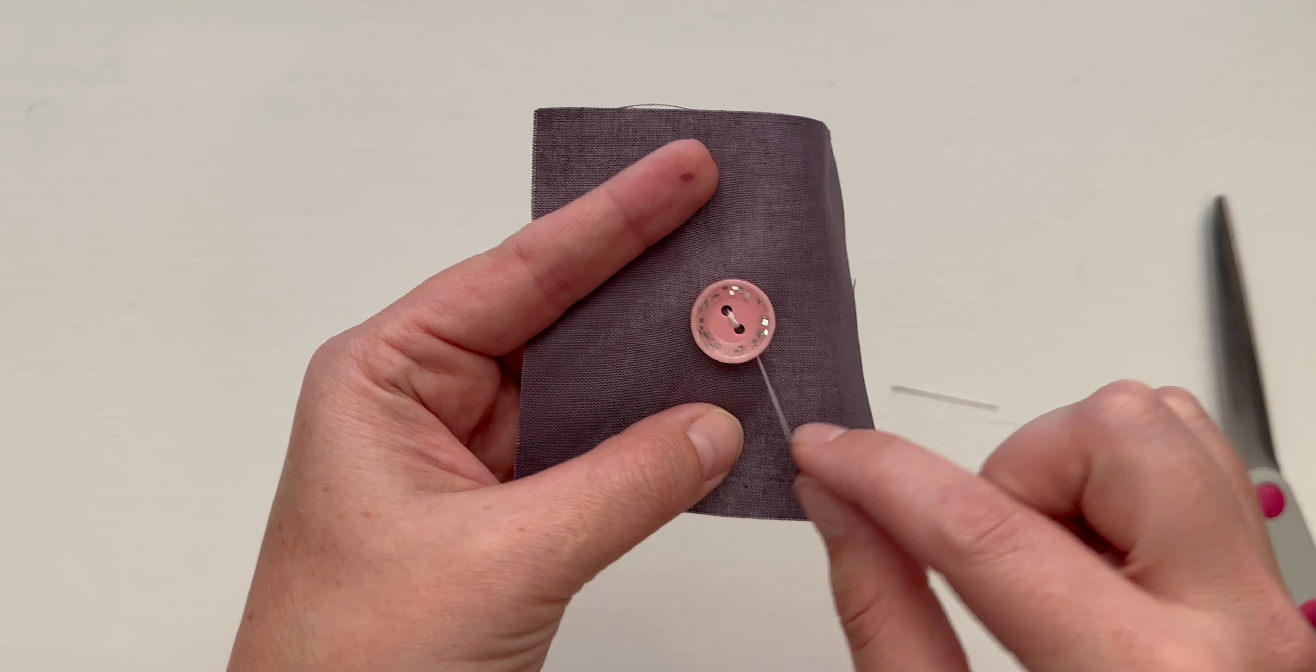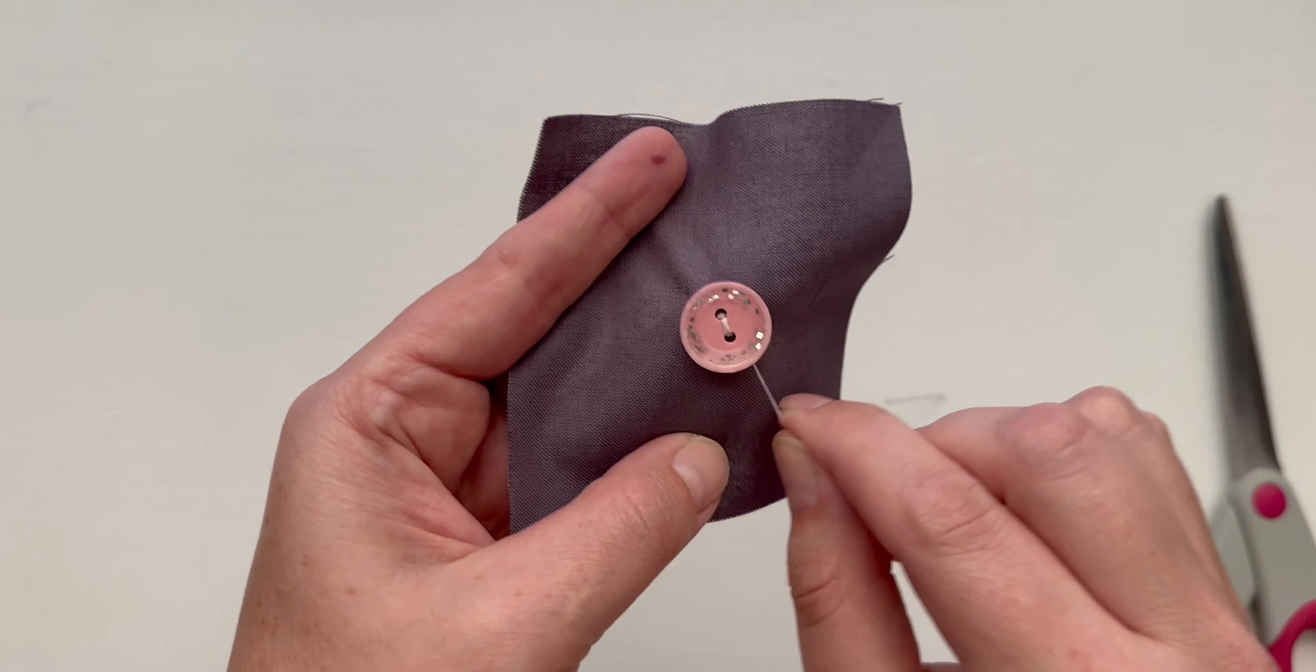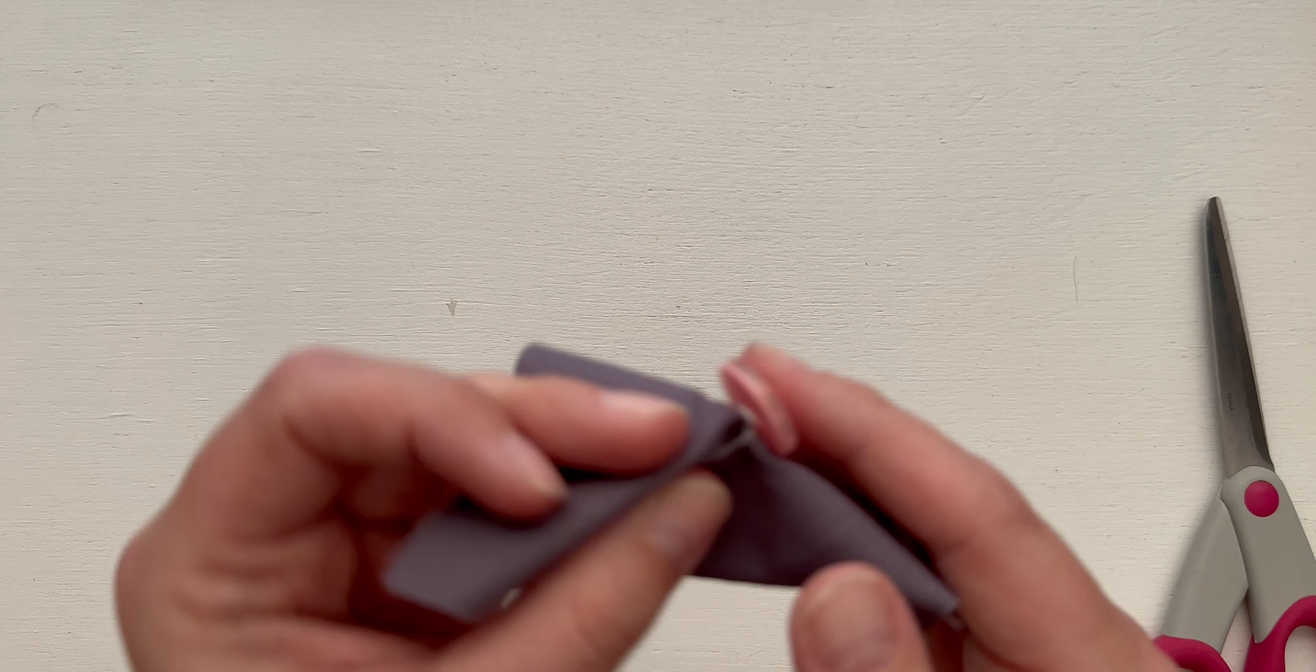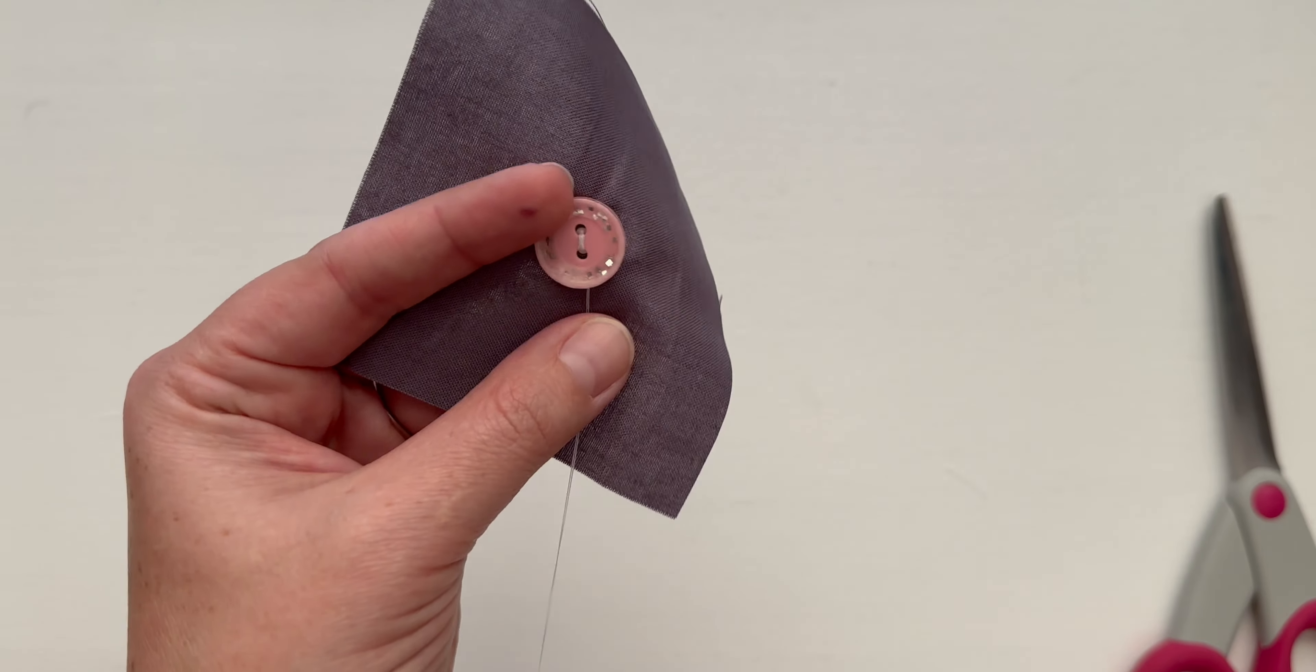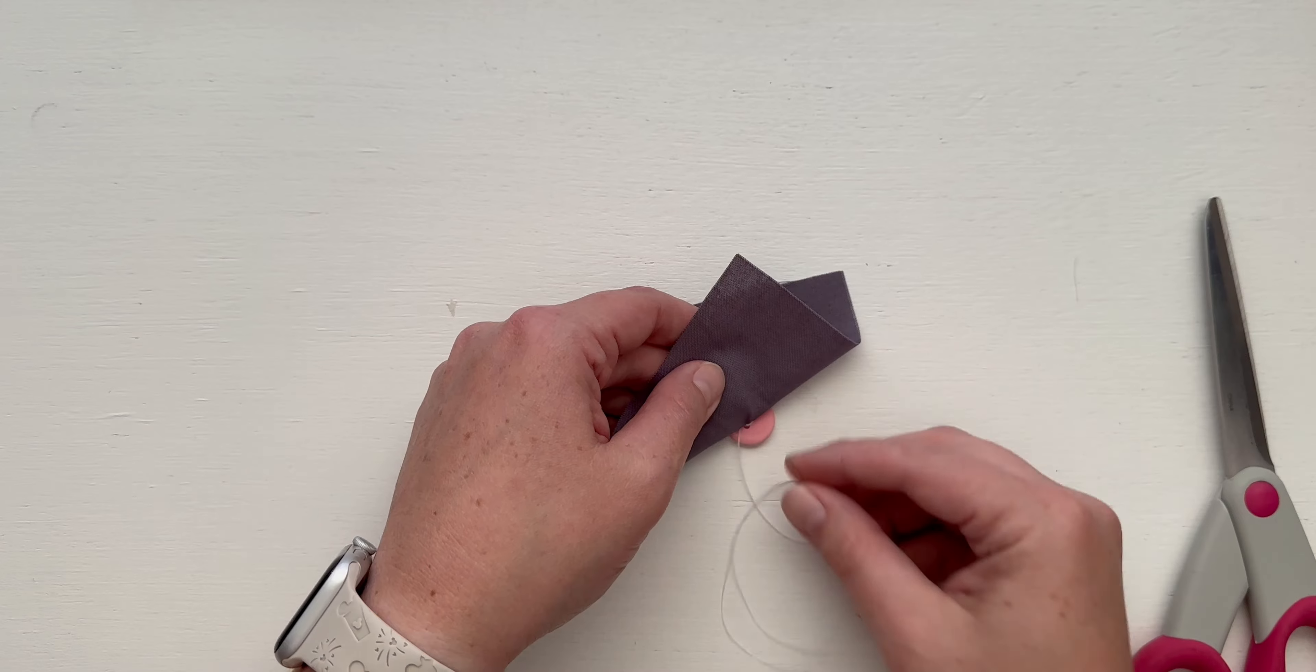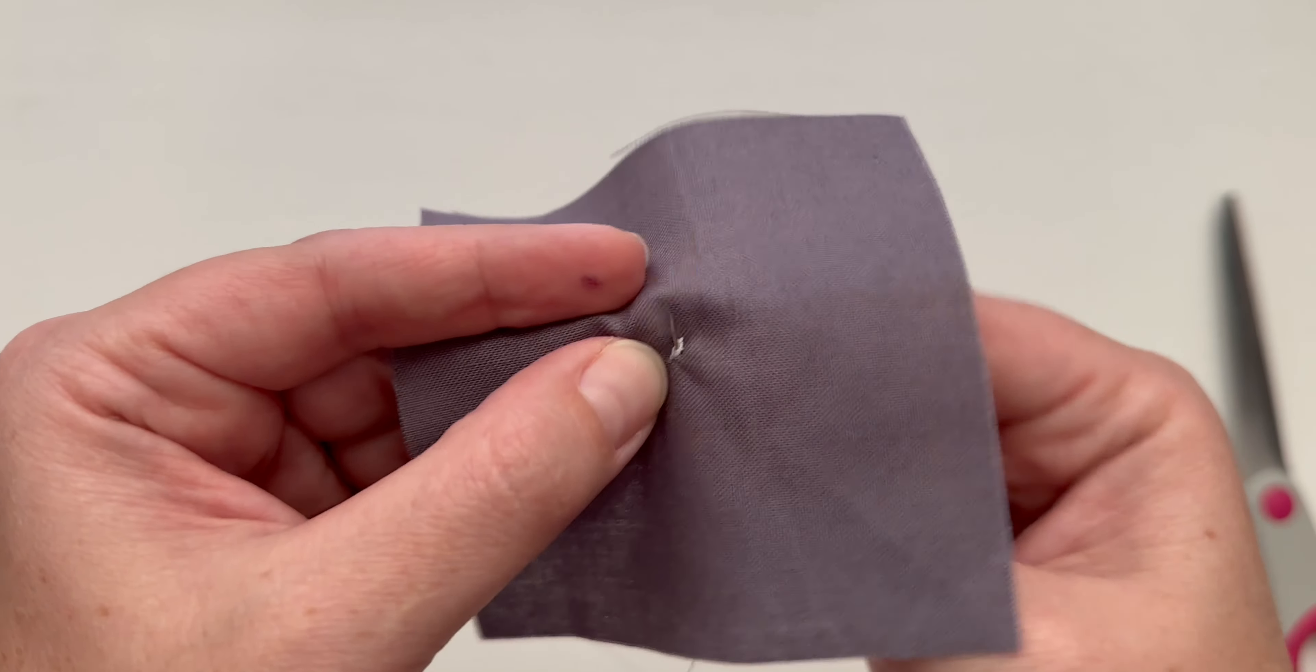And then I'm just going to wrap my thread around the button five times. So once, two times, three times, four times, five times. I'm going to take a look. Make sure that everything looks pretty good. You want your stitches to be tight to the button and not looped, kind of crazy and loose. Once you're happy with your thread shank, you are going to send it back through just the fabric, not the button, until your needle comes out near where the stitches already are.